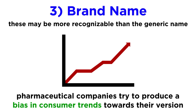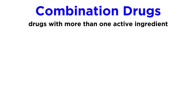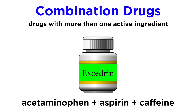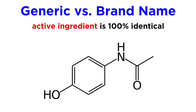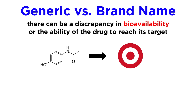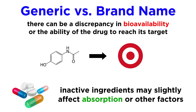Pharmaceutical companies rely on brand recognition as a result of advertising efforts in order to produce a bias in consumer trends towards their version of the drug, resting on the fact that most people do not realize that there is no difference, apart from dosage. A difference does arise, however, when it comes to combination drugs. Excedrin is a mixture of acetaminophen, aspirin, and caffeine, intended to combine the effects of these three drugs to produce more effective pain relief. In addition, while the active ingredient in a brand name drug and its generic counterpart is 100% identical, there can potentially be a discrepancy in bioavailability, or the ability of the drug to move through the body to reach its target and elicit the desired effect. This is due to inactive ingredients, which can influence the degree of absorption and other related factors, but typically these discrepancies are minimal or even completely negligible.